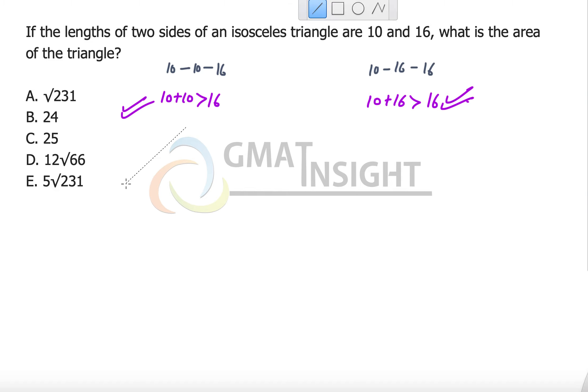Let's quickly draw the figures and figure out what the answer should be. Here we have the first case where the two sides are 10, 10, and the third side is 16. I will drop the perpendicular from the vertex which joins the two equal sides. This divides the base into two equal parts, 8 each.